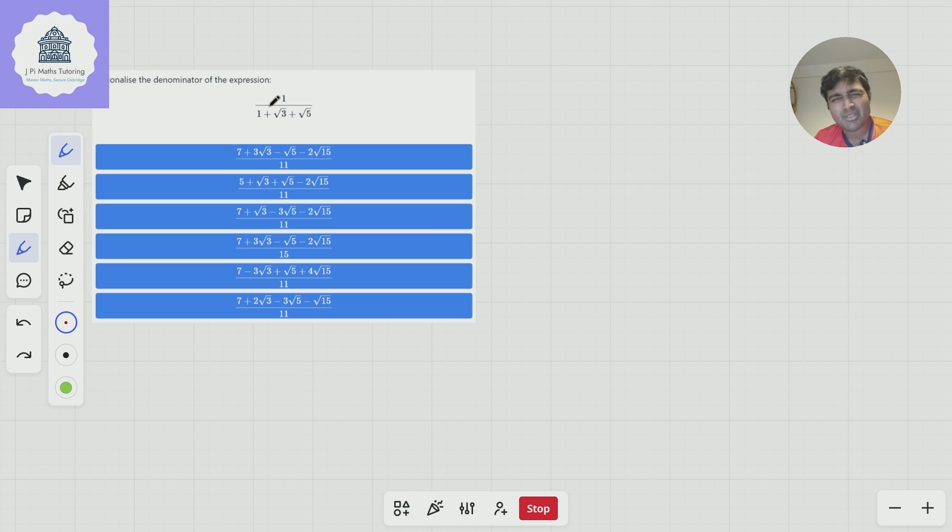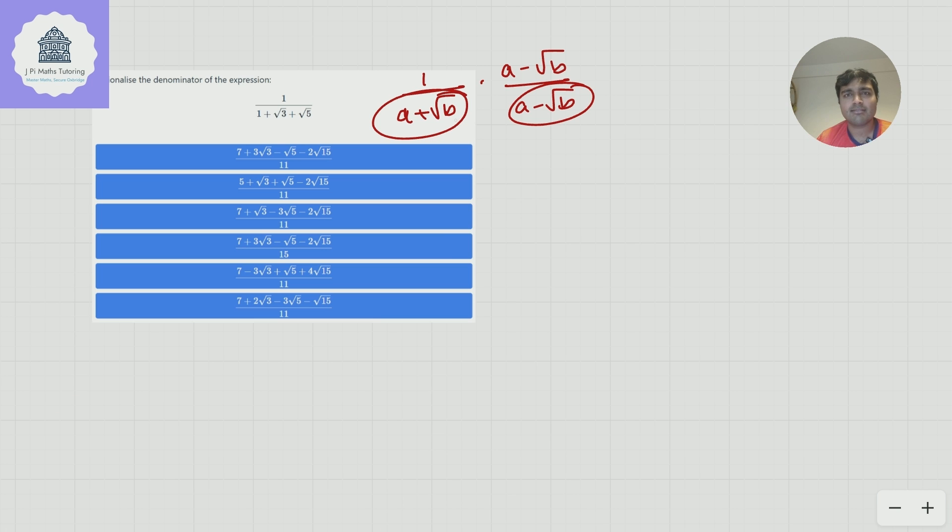Now I could just write out the solution but I want to give you a bit of intuition. If I was given this in an exam, how do I deal with it? Well I'm going to take a step back and ask myself how do I deal with it when there's just a normal thing in the bottom, so if it's like A plus root B. What we do is we multiply the top and bottom by A minus root B, and the reason that that rationalizes the denominator is because we're using the difference of two squares. Squaring something that's been square rooted kind of cancels it out.